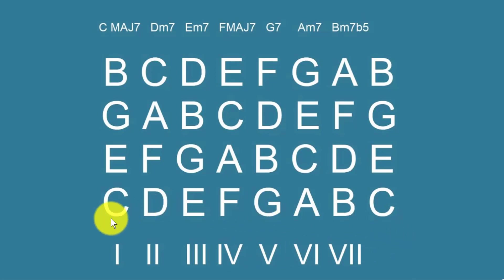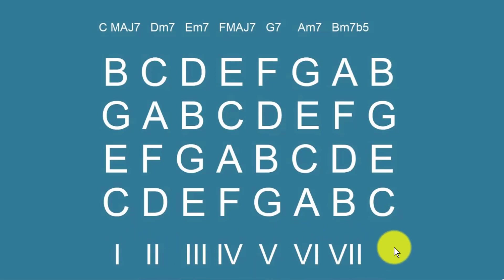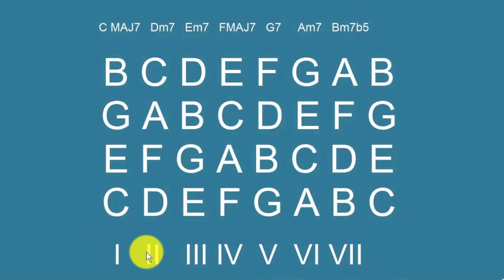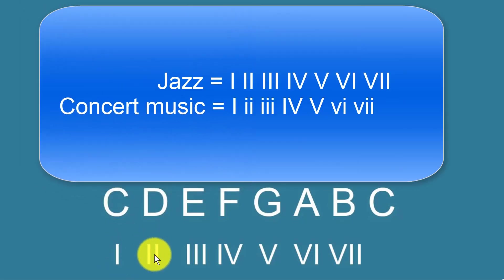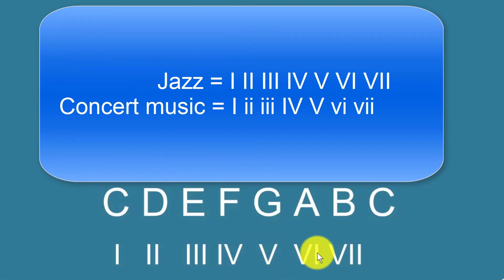Now in jazz harmony, this numeral notation at the bottom is always in capitals. In classical music, major chords would be large Roman numerals and minor chords would be small ones. But in jazz, everything is written in capitals.